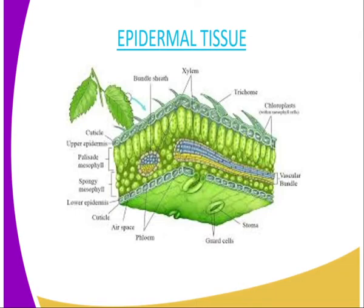In general, the epidermal tissue is a single thin layer of cells covering the outer surfaces — that is the upper and the lower. It protects the inner tissues of the plants from mechanical damage and infections. So the main function of the epidermal tissue is to protect the inner tissues of plants from infections and mechanical damage.